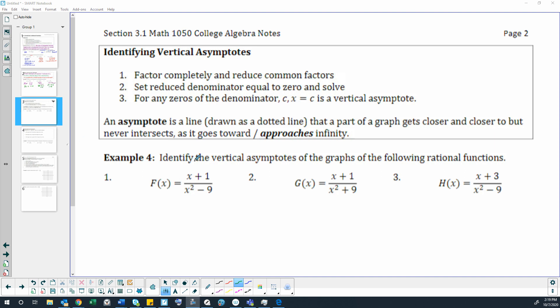In case you've forgotten, an asymptote is a line drawn as a dotted line that a part of a graph gets closer and closer to but never intersects as it goes toward or approaches infinity. Sometimes I like to fondly call these Gandalf lines because the graph shall not pass.